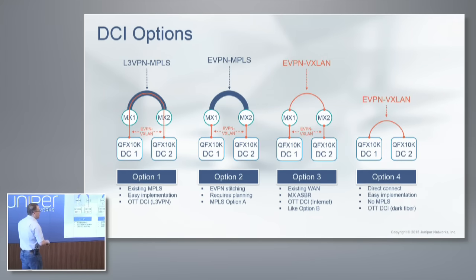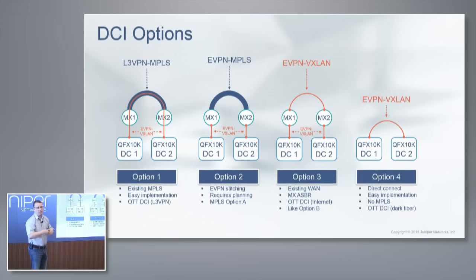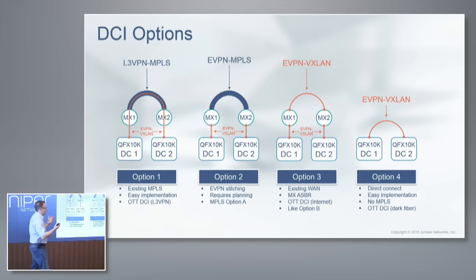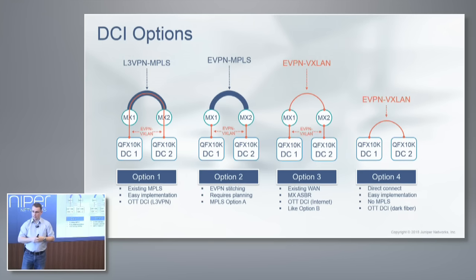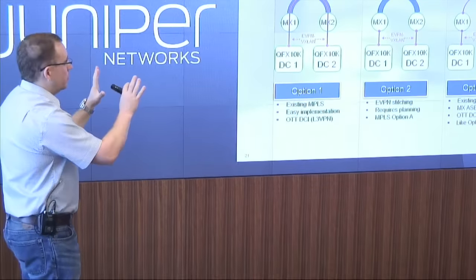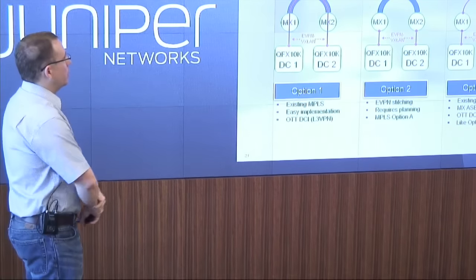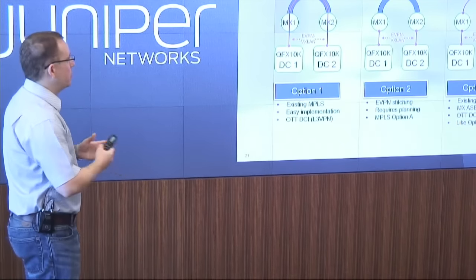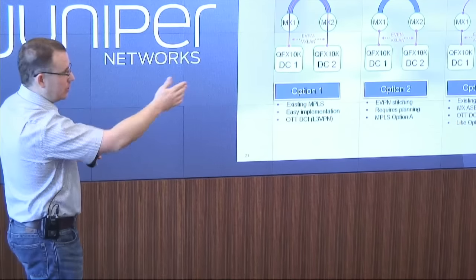The last option is the most simple: a back-to-back connection. If you have an edge router or peering router, you just directly connect them. There's no MPLS — you typically need dark fiber for this — but it would be EVPN with VXLAN natively. So that's four options for DCI when it comes to VXLAN and EVPN, all supported on our QFX 10,000.